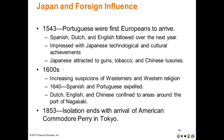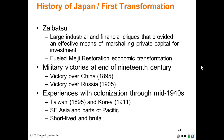In 1853, isolation ended with the arrival of American Commodore Perry in Tokyo. The Zaibatsu were part of the first transformation of Japan into an industrialized and developed society. These large industrial and financial cliques provided an effective means for marshalling private capital for investment, fueling the Meiji Restoration's economic transformation.